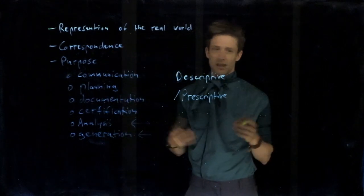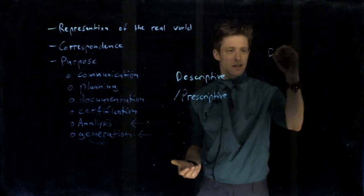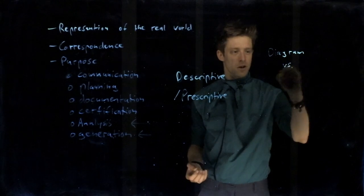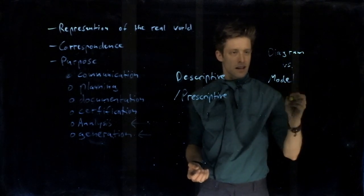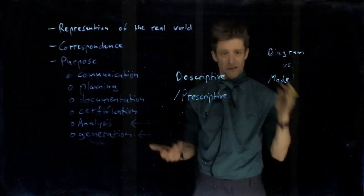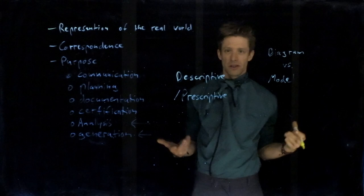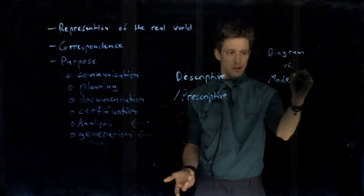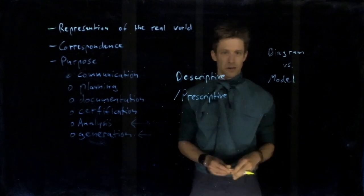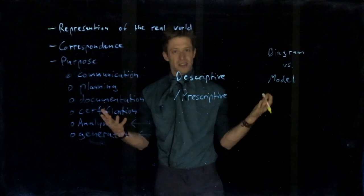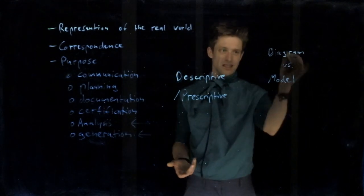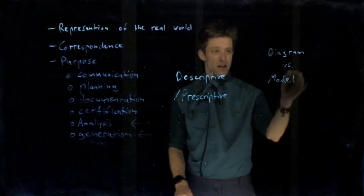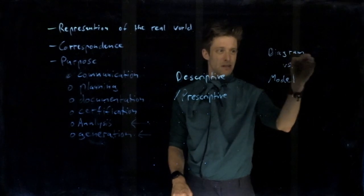People mix the terms diagram and model a lot. A diagram is something graphical. A model doesn't have to be graphical — in many other areas of science, people mean mathematical equations when they talk about a model, like a statistical equation. So a diagram is a picture of something, and in UML and software engineering generally, a diagram is a view on the model.